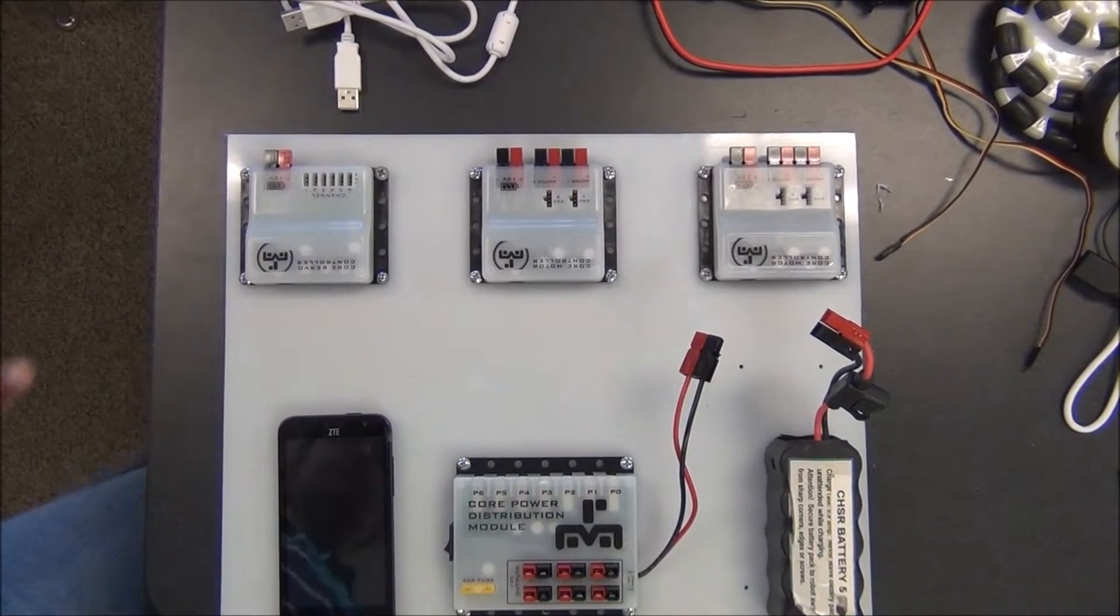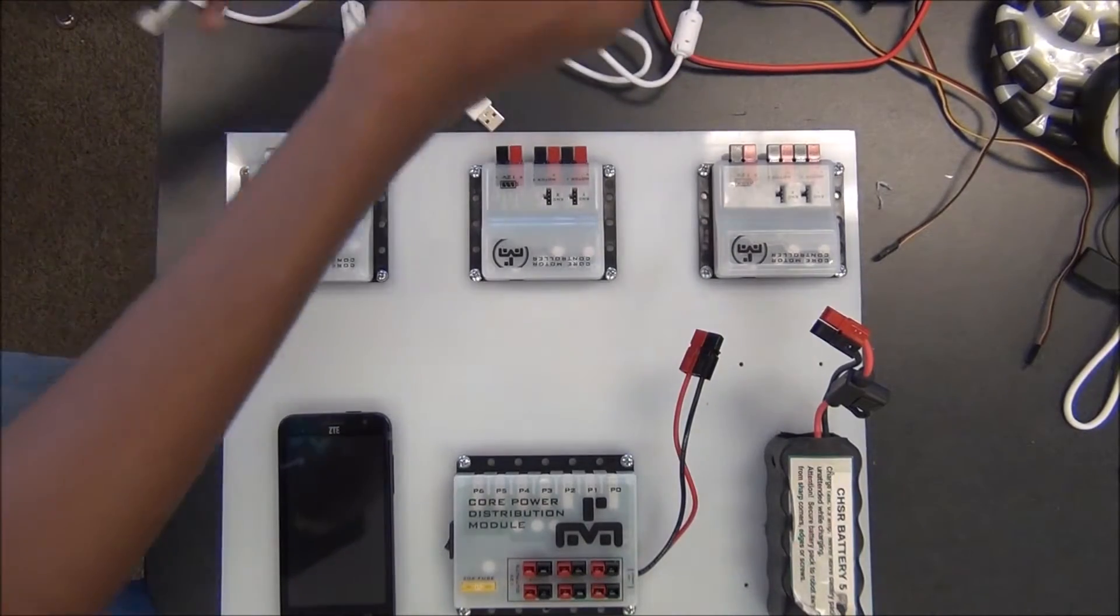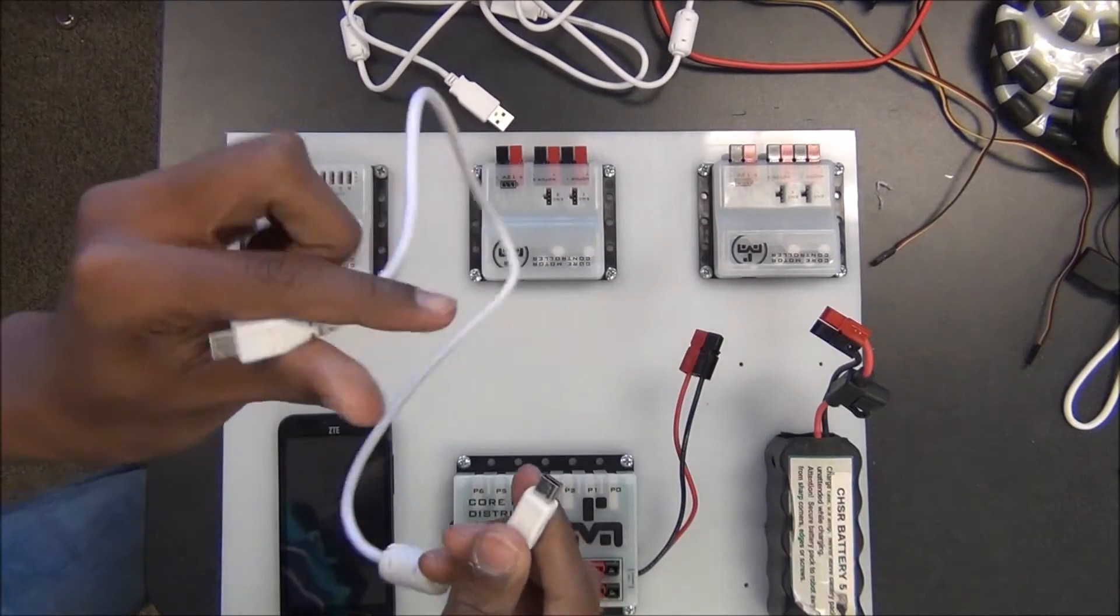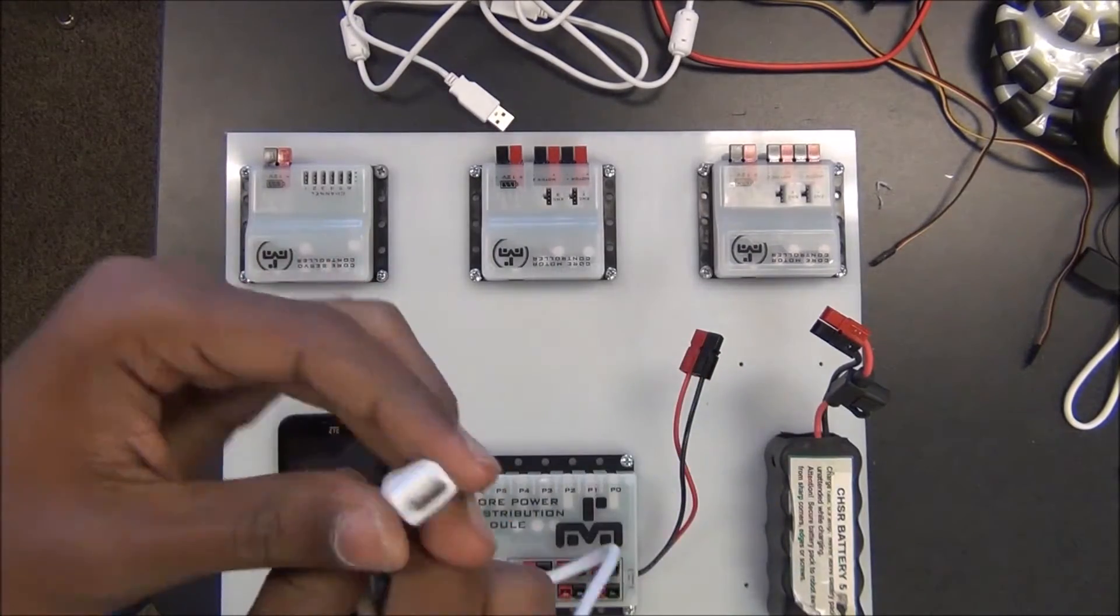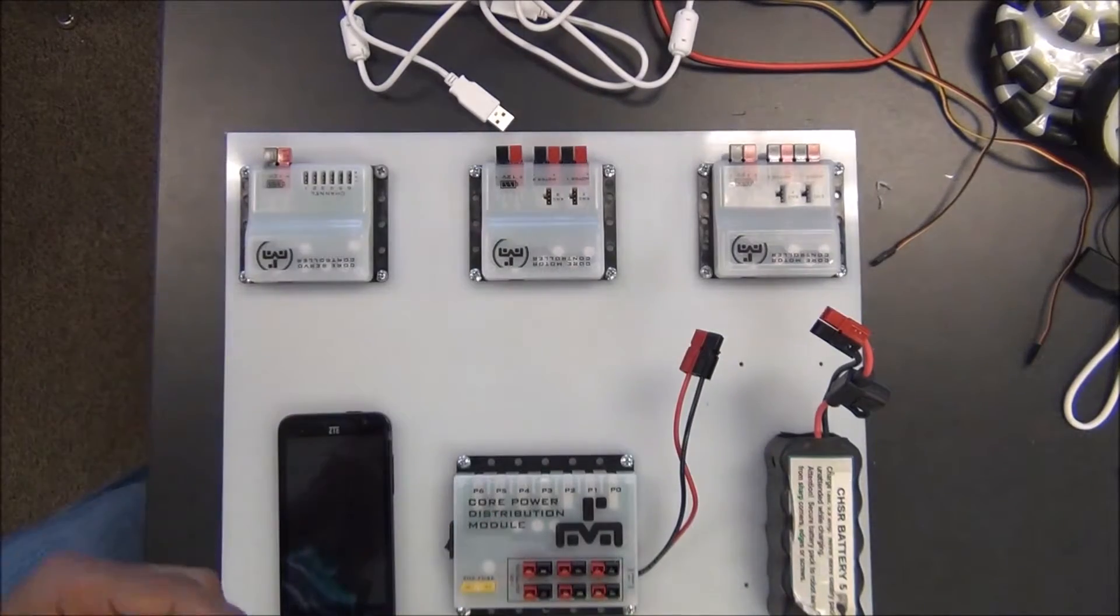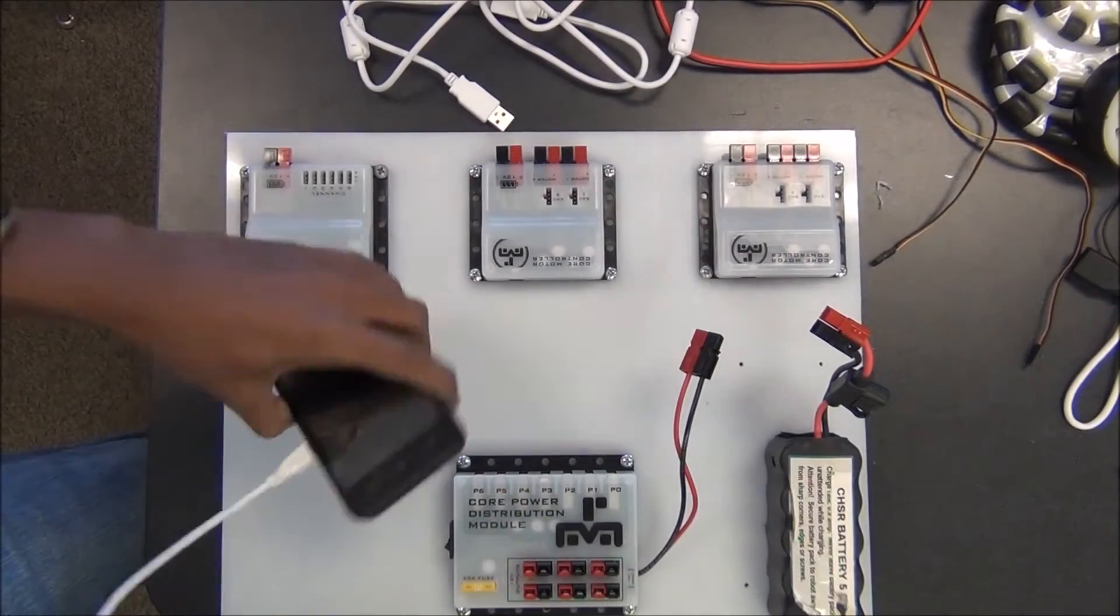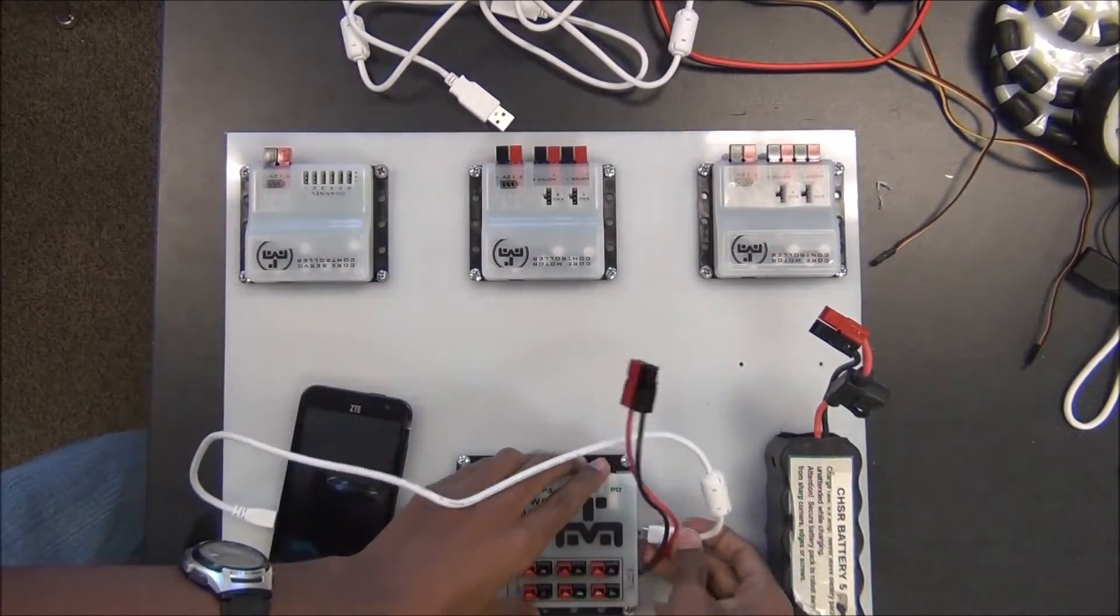Today I'm going to show you how to wire the generic FTC robot setup with two motors and two servos. Here is the male micro USB to male mini B connector. I'm going to plug one end into the ZTE speed phone and then the larger end into the core power distribution module.